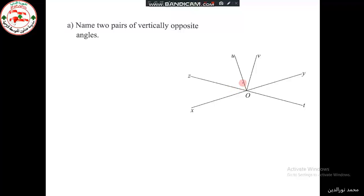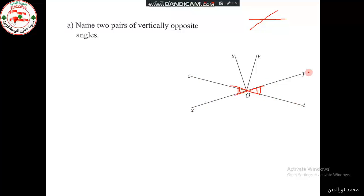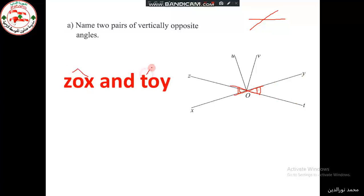Let's look at the figure. Where are the vertically opposite angles? We have this angle which is vertically opposite to this angle. So, angle Z, O, X is opposite to angle T, O, Y. So, Z, O, X and T, O, Y are vertically opposite.